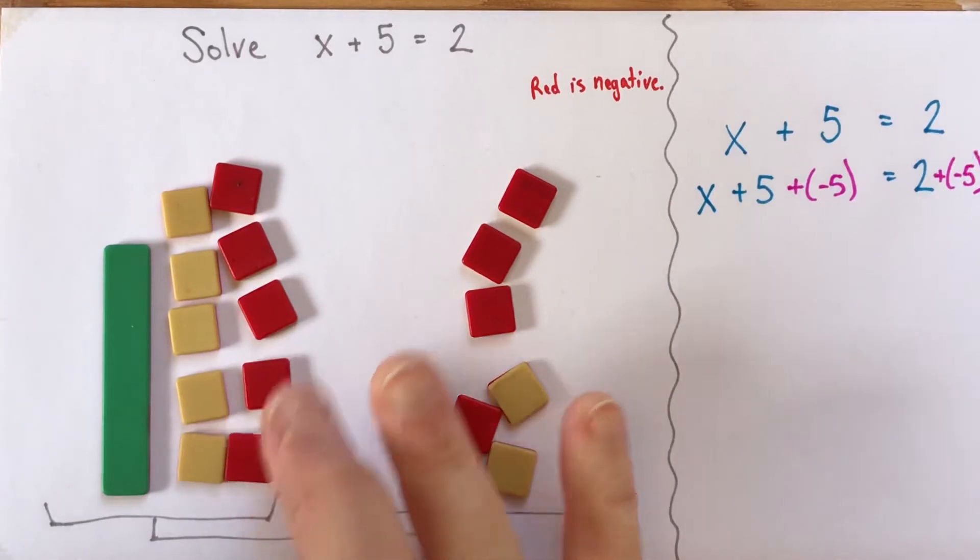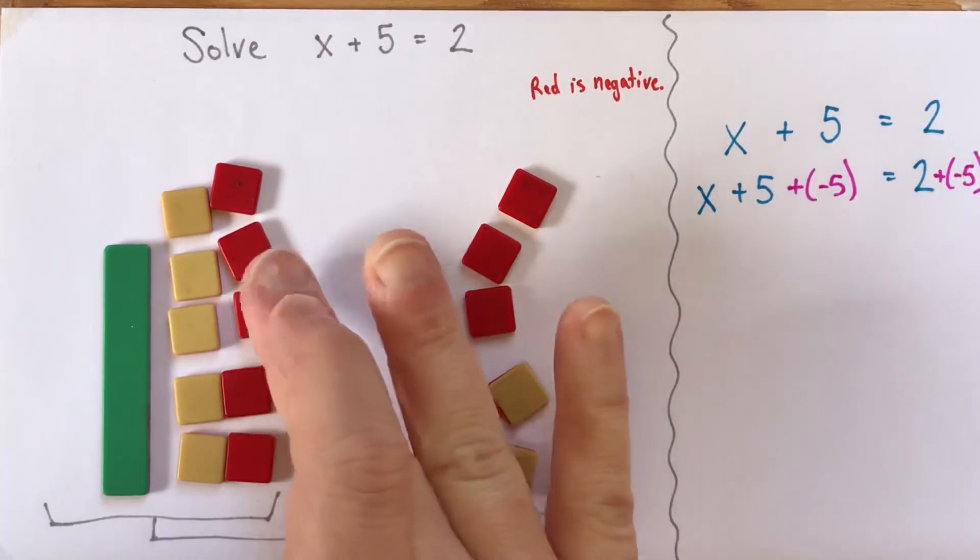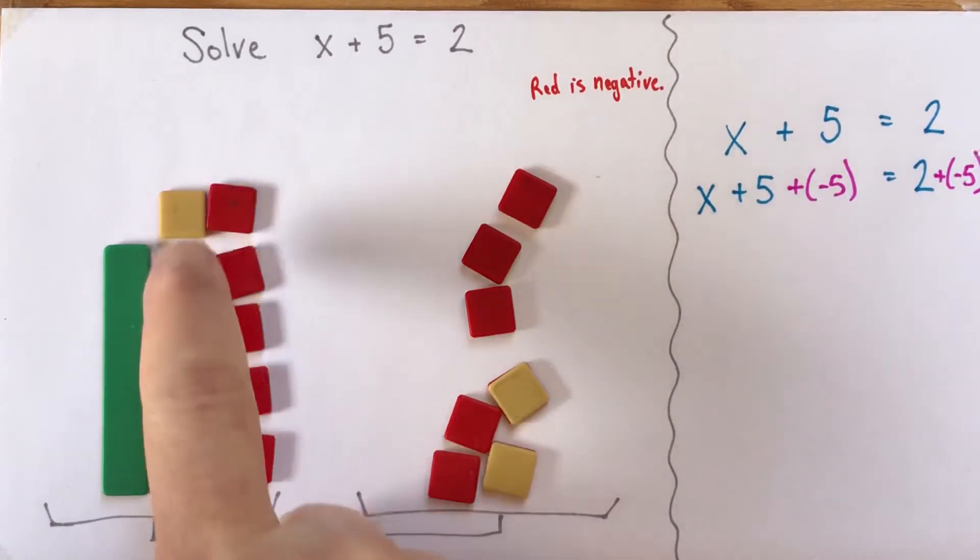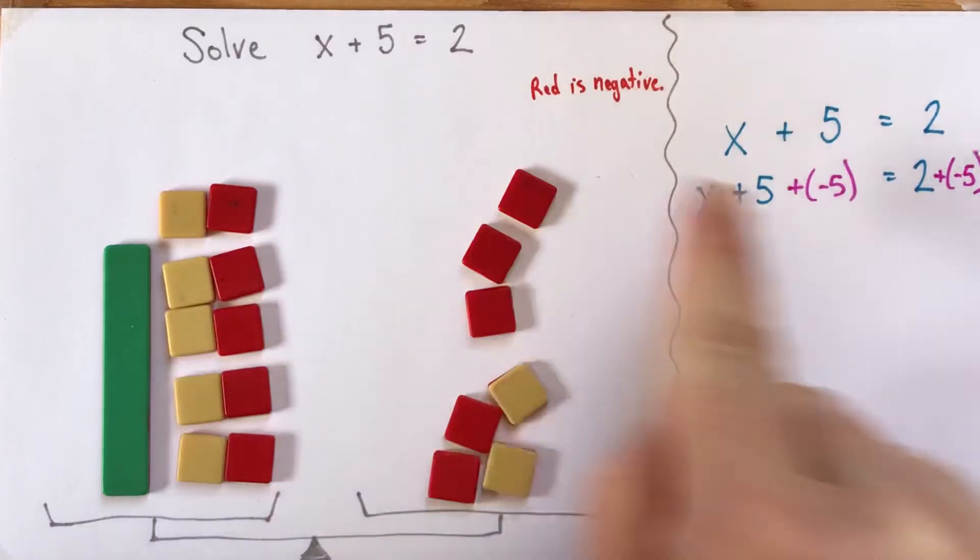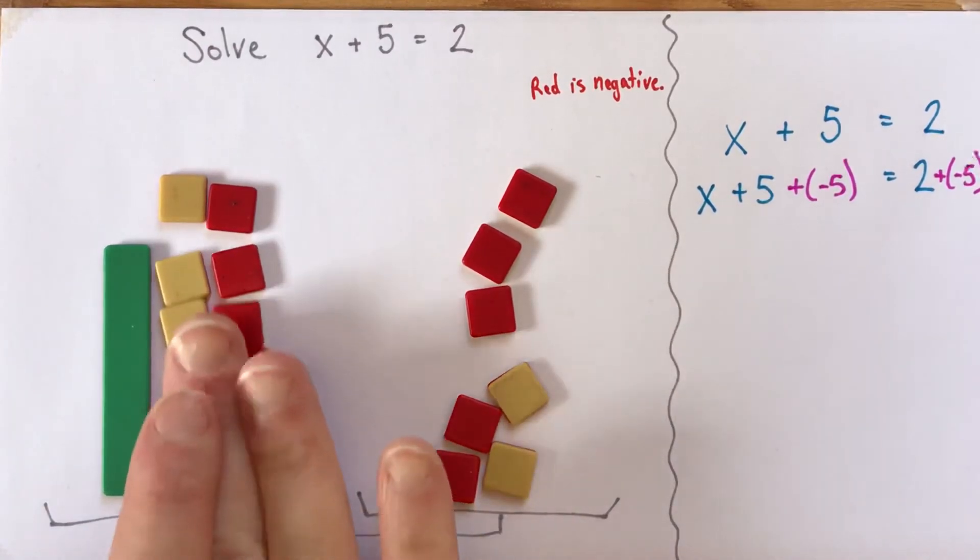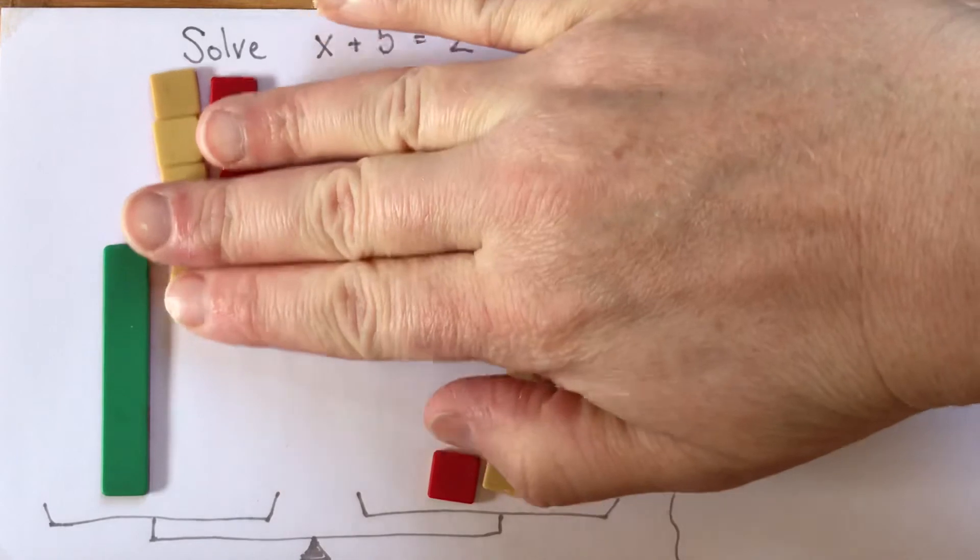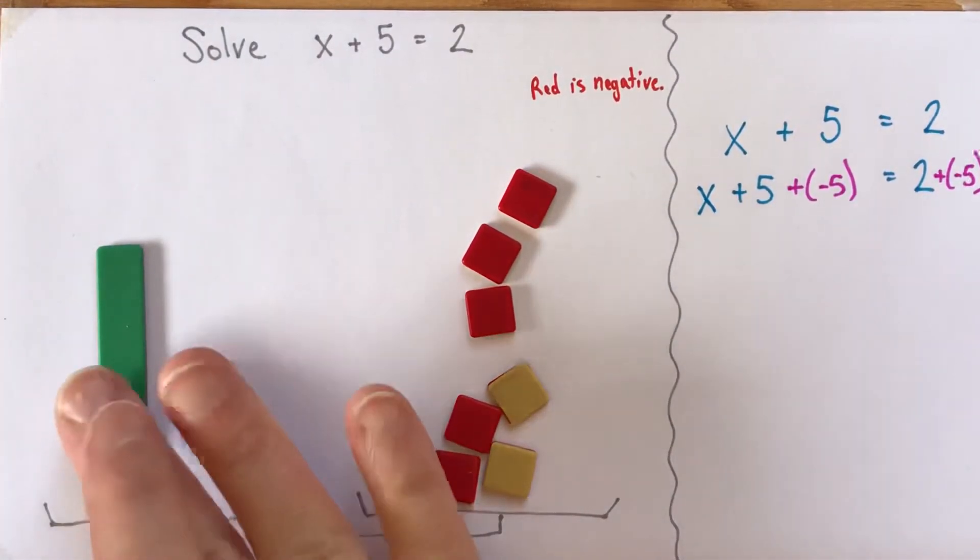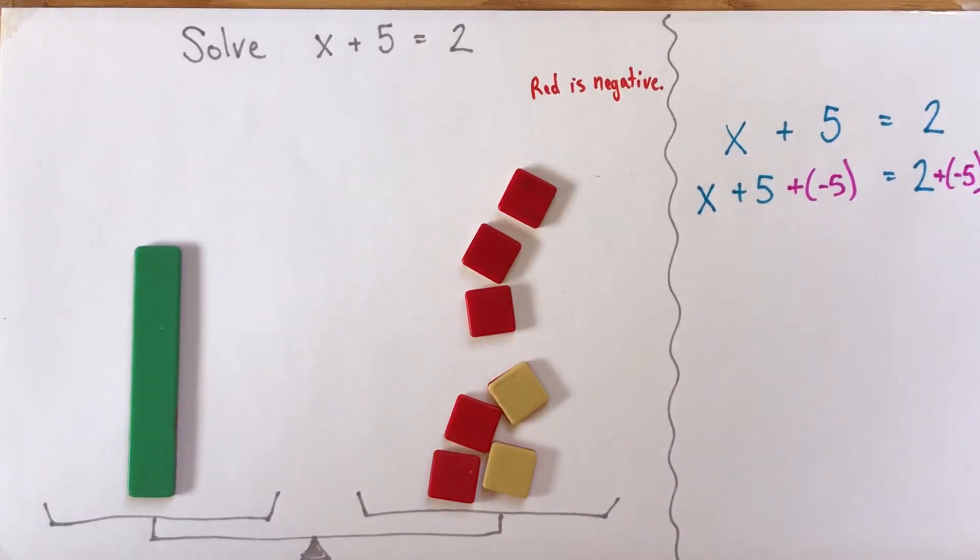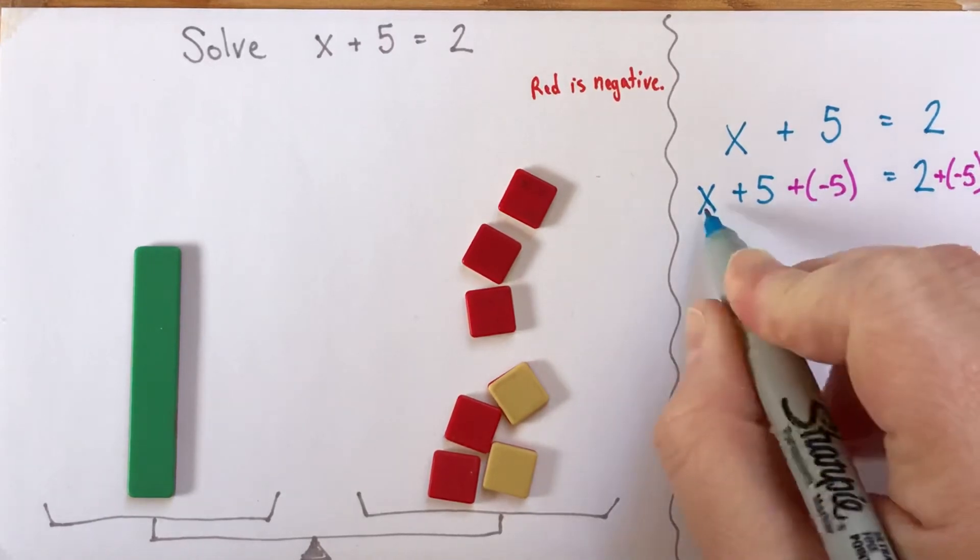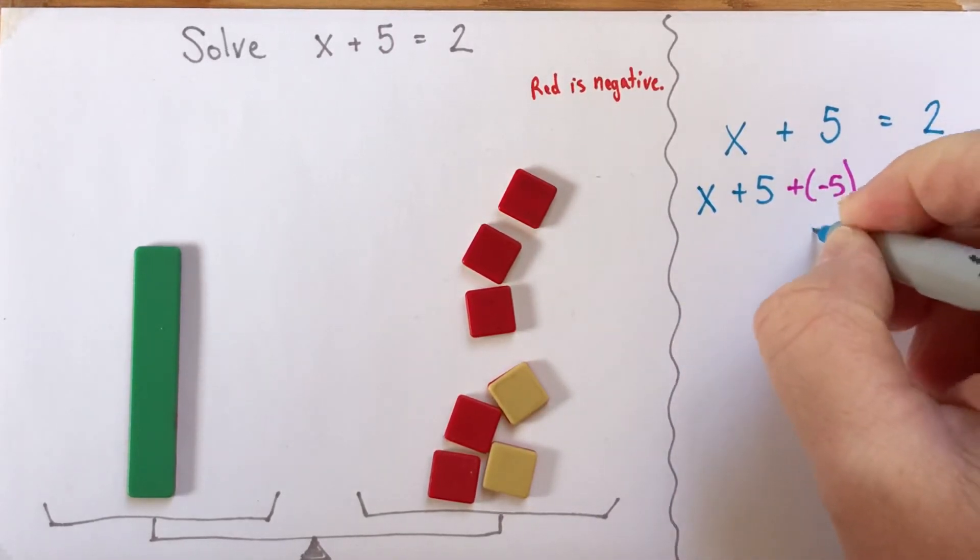And then if you look ahead here, you can think, well, why should we add negative 5? But it's because I could imagine what was going to happen with all these zero pairs. If I had 5 plus negative 5, 5 yellows plus 5 reds, that makes a bunch of zero pairs. So all of this is worth nothing. That's all worth zero. So I can take that away without changing the value, without changing the weight on this side of the balance.